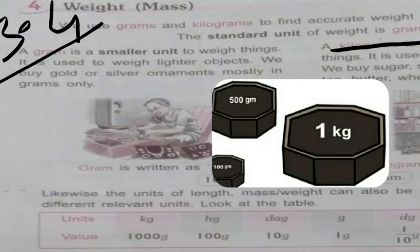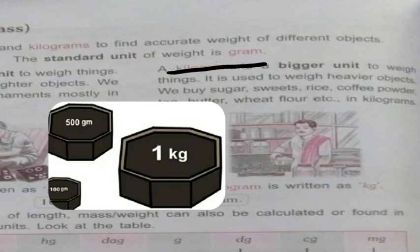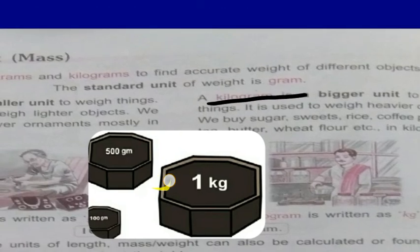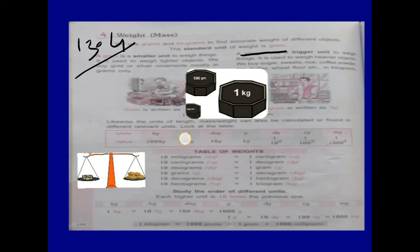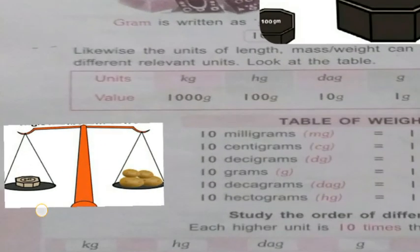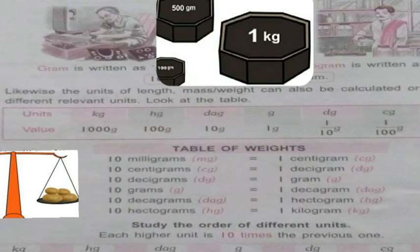Kilogram is the bigger unit used to weigh heavier objects. We buy sugar, sweets, rice, coffee powder, butter, wheat flour, potatoes, and vegetables in kilograms. The short form of kilogram is kg, and for gram we write gm. Here you can see weight scales — these are the weights used to weigh things. On a balance scale, if a 1 kg weight is placed on one side, then 1 kg of potatoes will balance on the other side.